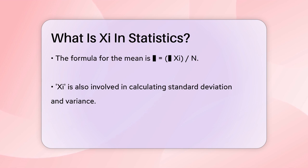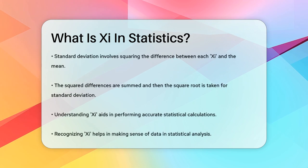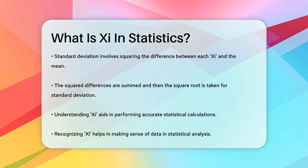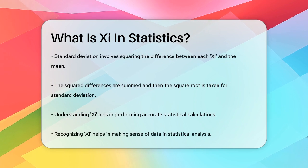In addition to the mean, Xi is used in calculating other important statistical measures like the standard deviation and variance. For example, the standard deviation formula involves squaring the difference between each Xi and the mean, summing these squared differences, and then taking the square root.